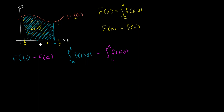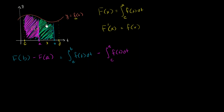Let's say a is right over here. Capital F of a is literally the area between c and a under the curve lowercase f of t — all of this right over here. So if you have the blue area, which is capital F of b, and you subtract out this magenta area, which is capital F of a, what are you left with? You're left with this green area. And we could denote that as the definite integral between a and b of f of t dt.